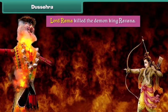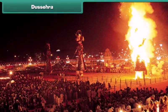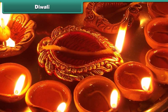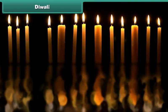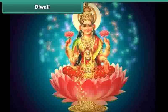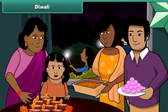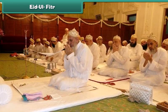Dussehra is another Hindu festival that marks the victory of good over evil. It is believed that on this day Lord Ram killed the demon King Ravan. People gather in a large field in the evening and burn effigies of Ravan, his brother Kumbhakaran, and son Meghnad. Diwali is also a Hindu festival — the word Diwali means a row of lights. Hindus believe that Lord Ram returned to Ayodhya on this day after 14 years of exile. Hindus worship Goddess Lakshmi on Diwali and seek her blessings, and also exchange sweets and gifts with relatives and friends.